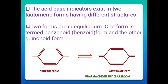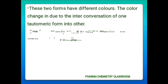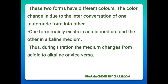They are both resonant structures. These two forms have different colors, and the color changes due to the interconversion of one form into the other. Their existence depends on the pH of the medium — one form exists mainly in acidic medium and the other in alkaline medium.